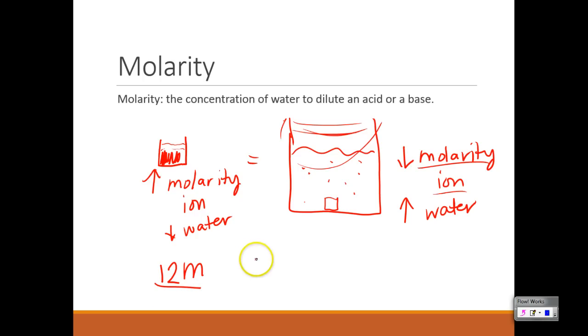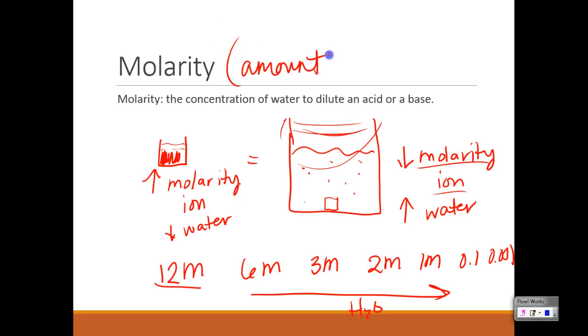So what we do is we dilute them with water to make a 6 molar acid, to make a 3 molar acid, to make a .01 molar, a .1 molar, a .001 molar acid. And then as we go this way, we're getting more and more water.